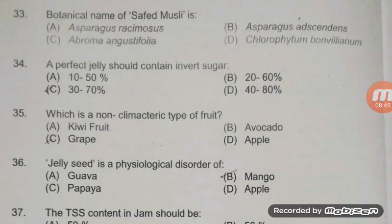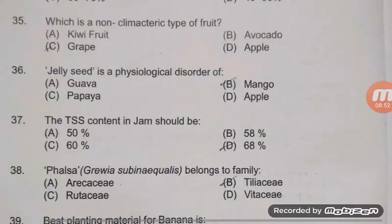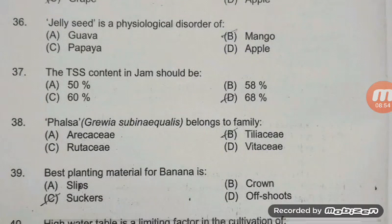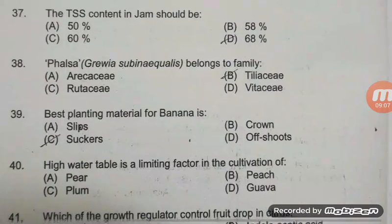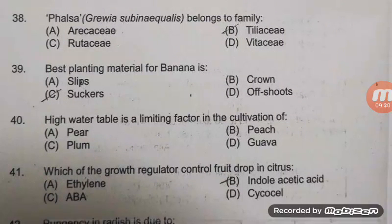Tommy Atkins is a highly susceptible variety for jelly seed. The TSS content in jam — the right answer is D — 68%. Falsa belongs to the family — the right answer is B — Tiliaceae. The best planting material for banana is suckers — option C is the right answer. Slip, crown, and suckers are generally used in pineapple.